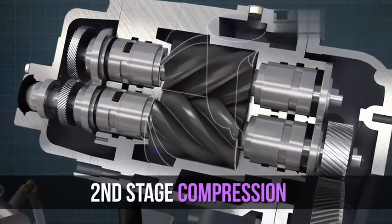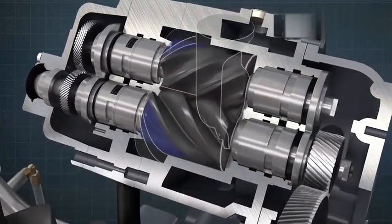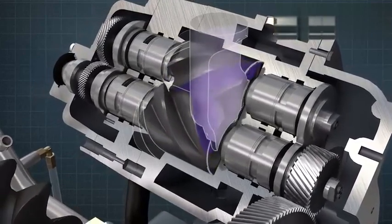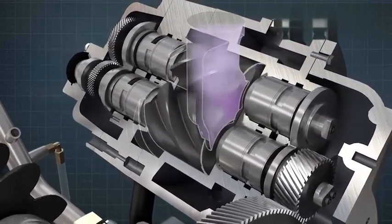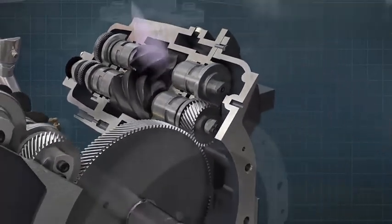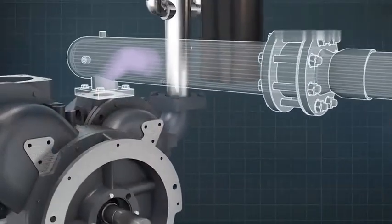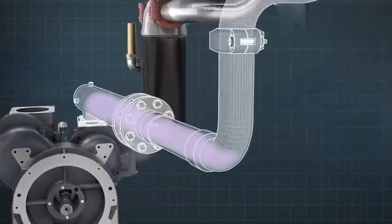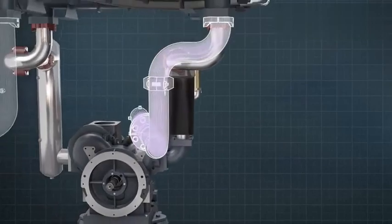The second stage further compresses the air to the required pressure in the same manner as the first stage. However, this time, the compression process takes place on the upper side of the rotors. The compressed air exits the air end via a delivery silencer, then through a non-return valve. The air then passes through a final second stage air or water cooler.